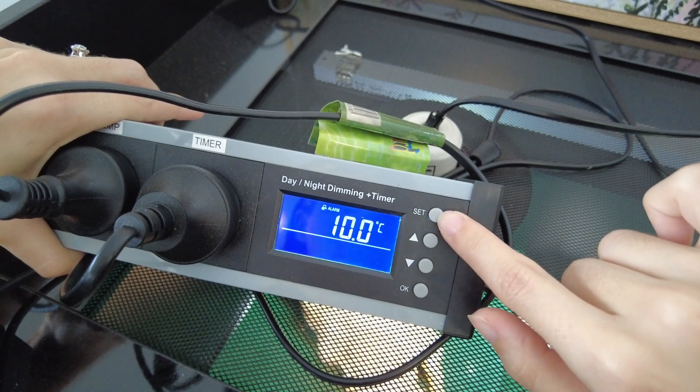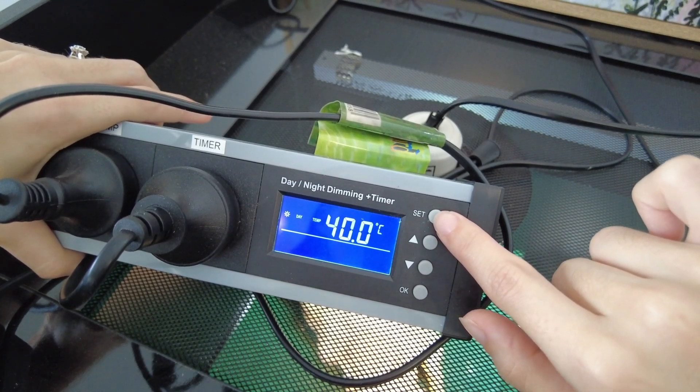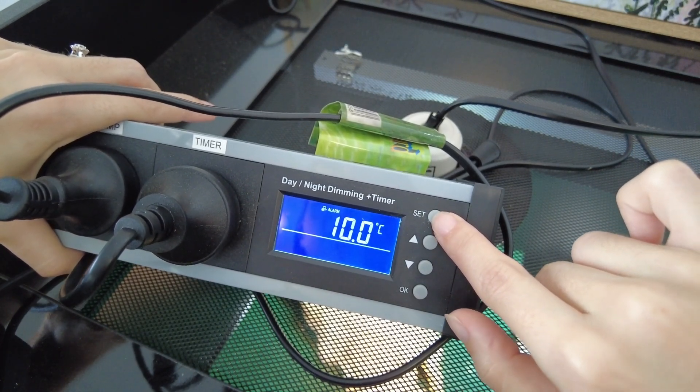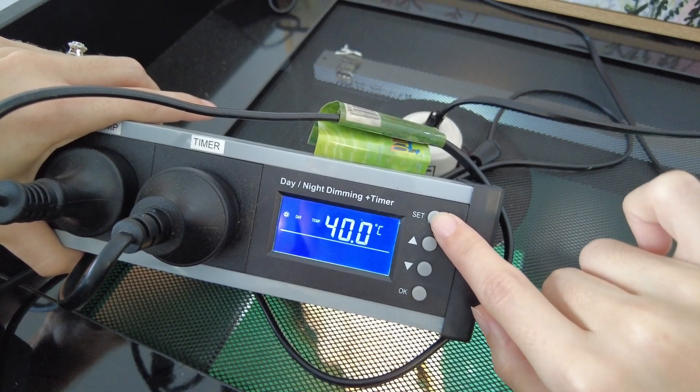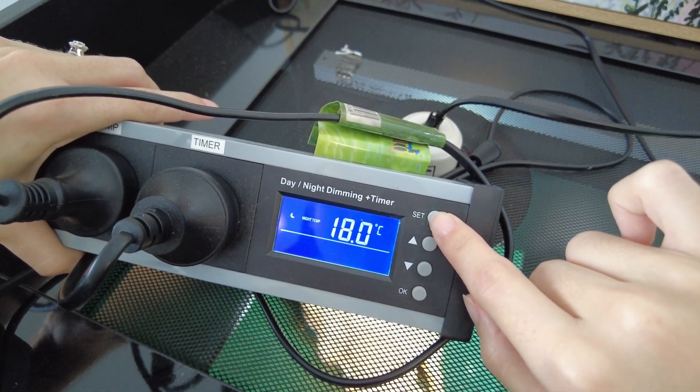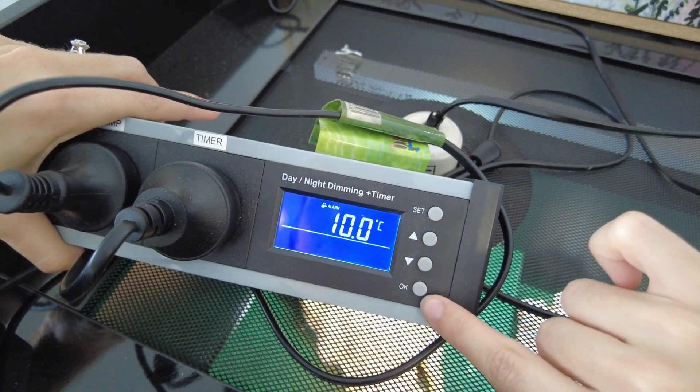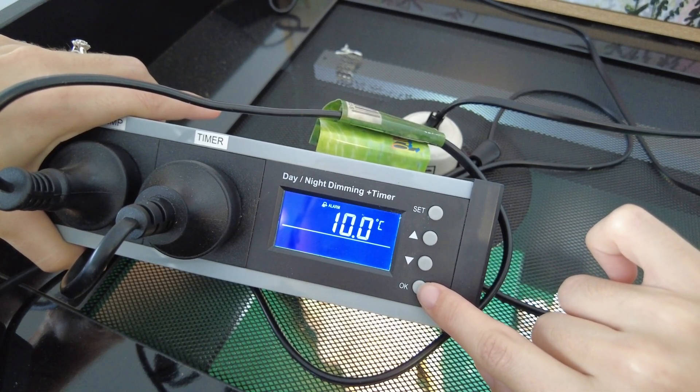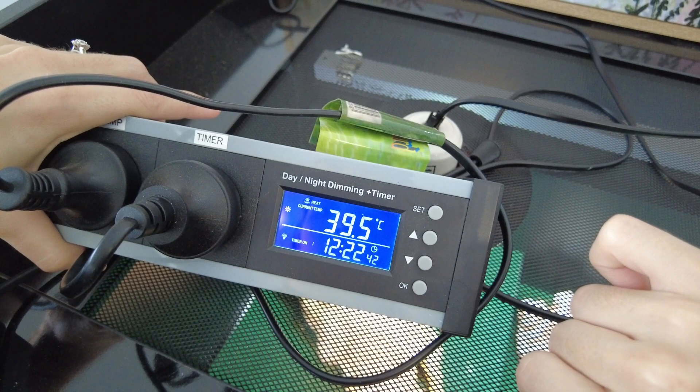So if you make a mistake just keep pressing set and it will go around again and you can edit all of these things as needed. But once you're happy with your daytime temperature and your nighttime temperature and your alarm, you're just going to press OK and it'll take you back to the home screen.